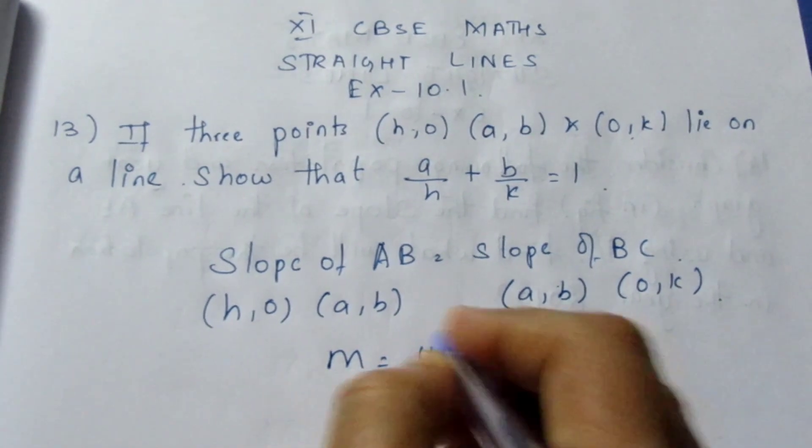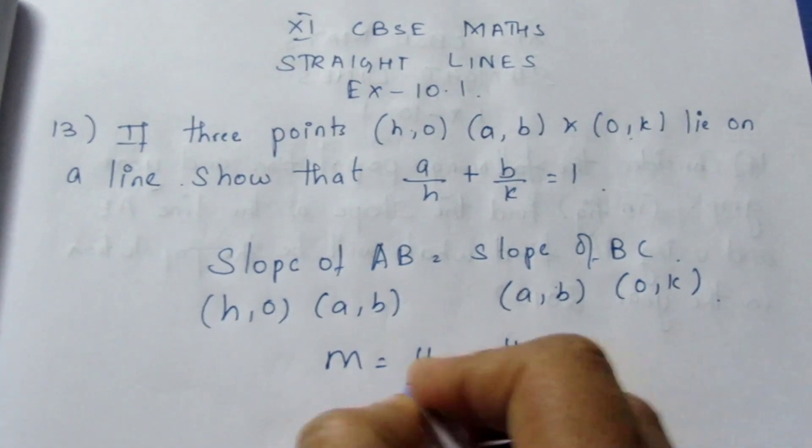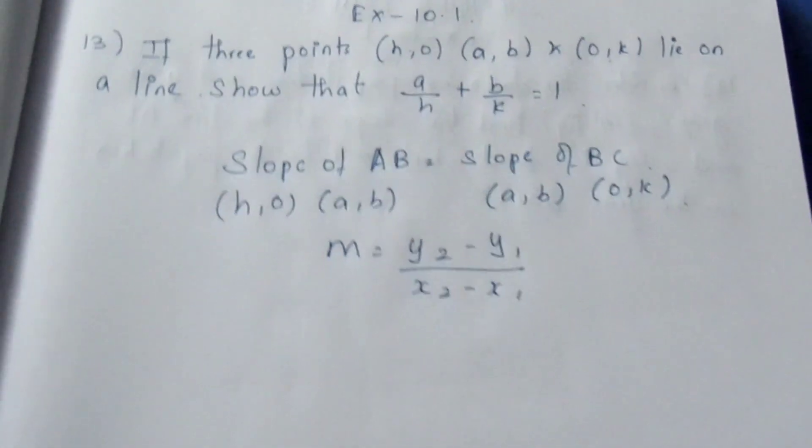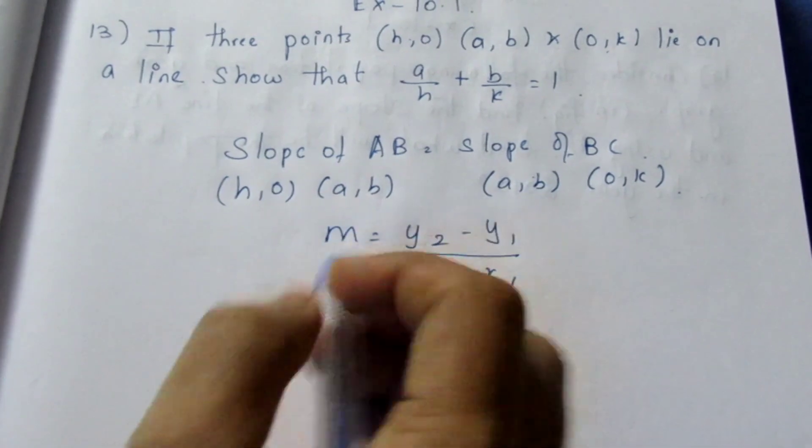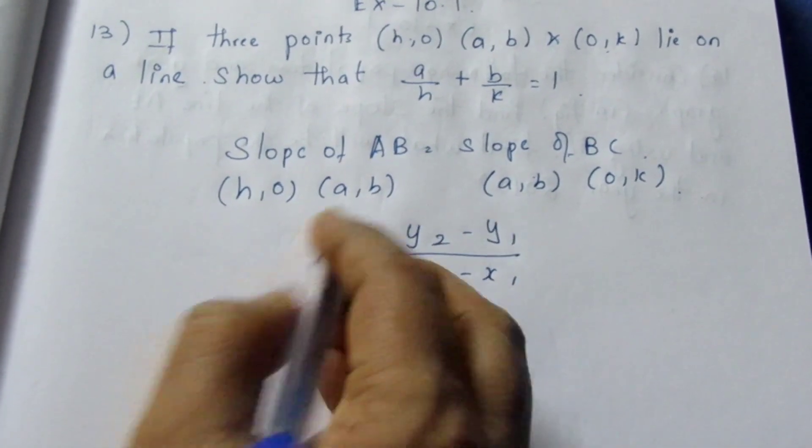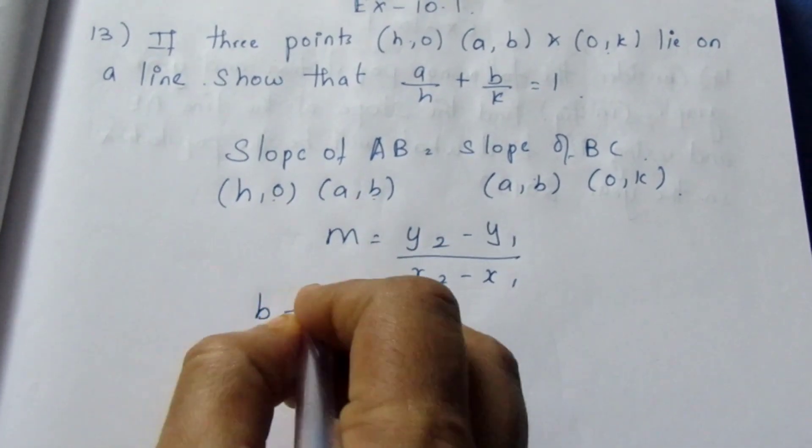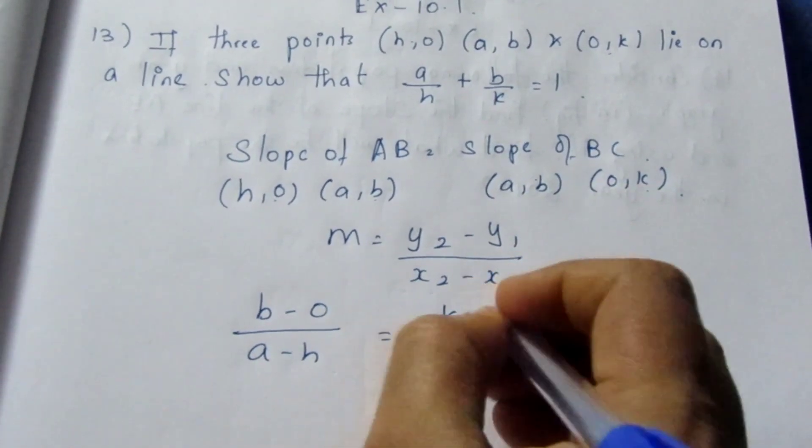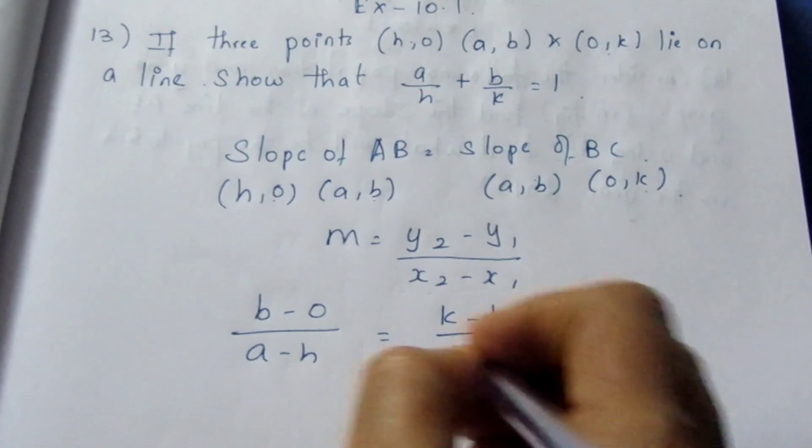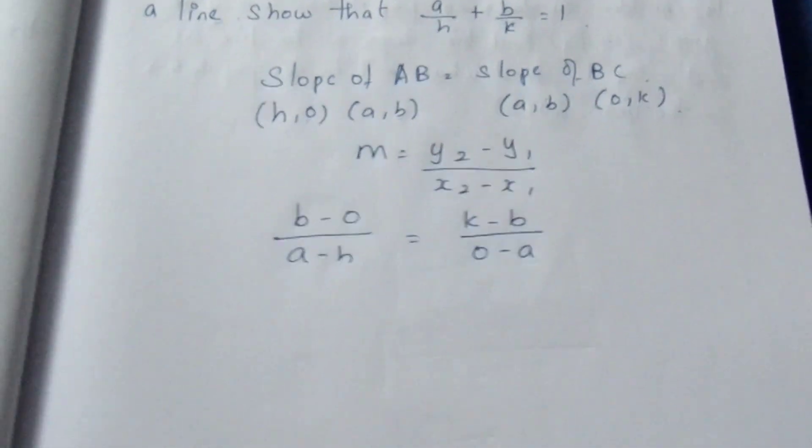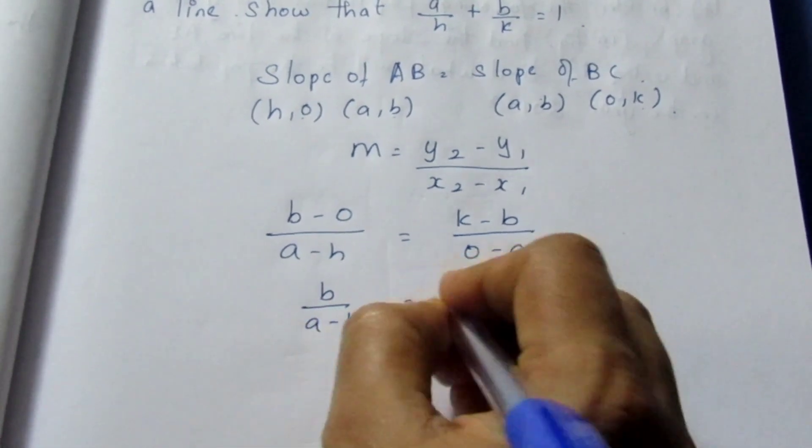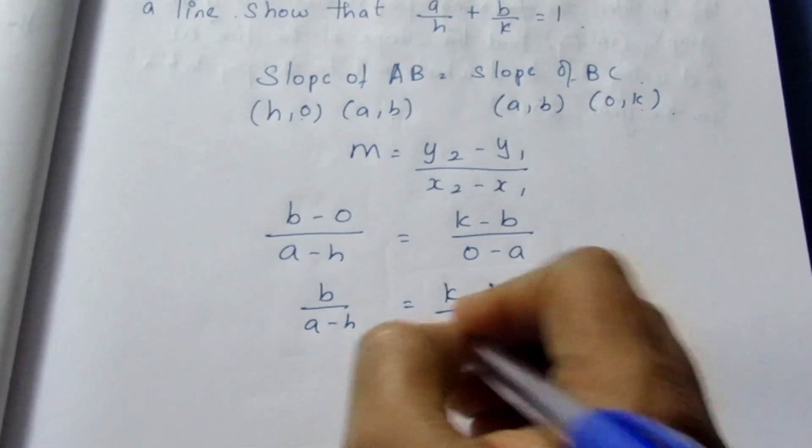Slope formula is, for two points, it is y₂ minus y₁ by x₂ minus x₁. We can substitute the formula on both sides. Here it becomes b minus 0 by a minus h is equal to k minus b by 0 minus a. Now this becomes b/(a-h) = (k-b)/(-a).